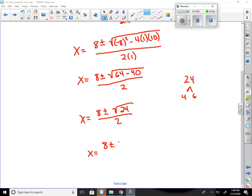X equals 8 plus or minus 2 times the square root of 6 over 2. Try to simplify the front. 8 divided by 2 is 4. 2 divided by 2 is 1. So that just becomes 4 plus or minus 1, which we don't have to write in. Square root of 6. That's your final answer.